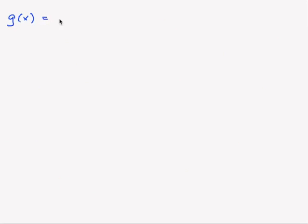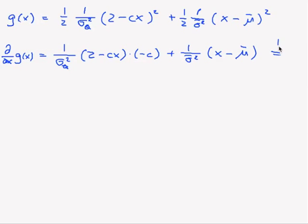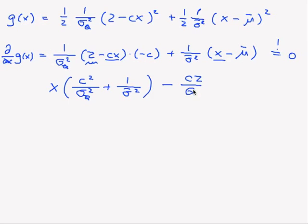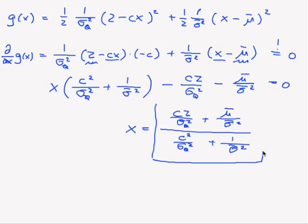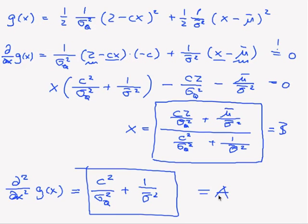We use this trick to rearrange our exponent. Our function quadratic in x is one half times (1 / σ_q²) times (c minus cx)² plus one half times (1 / σ overline²) times (x minus μ overline)². We form the derivative and set it to zero to find the solution x — this is our b. We also compute the second derivative by grouping according to x, giving c² / σ_q² plus 1 / σ overline², which is our a.